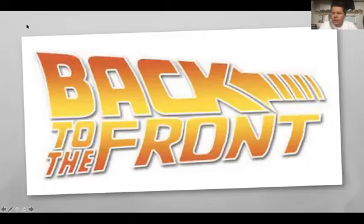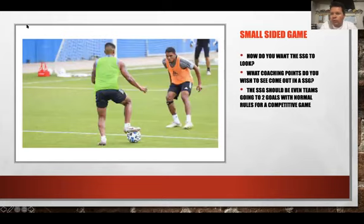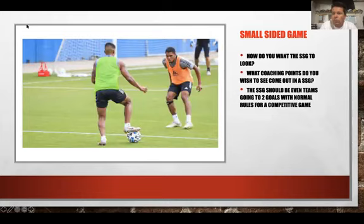When it comes to designing the lesson plan, my advice is to work from back to front. We do this to make sure we think about how we'd like our players to look at the end of a scrimmage, which is the most realistic environment. So the first thing we focus on is the small-sided game that ends the practice — what coaching points do we want to see come out of it? The small-sided game should be two even teams going to two goals with normal rules for a competitive game.